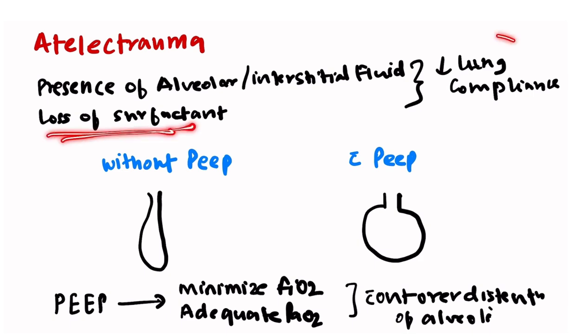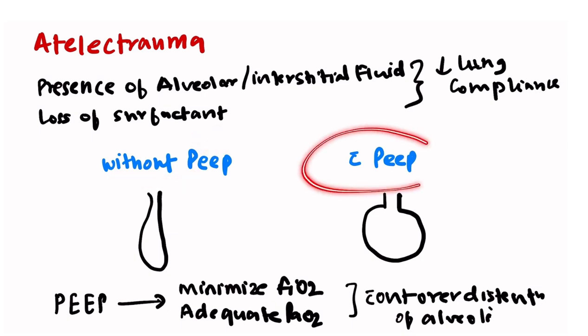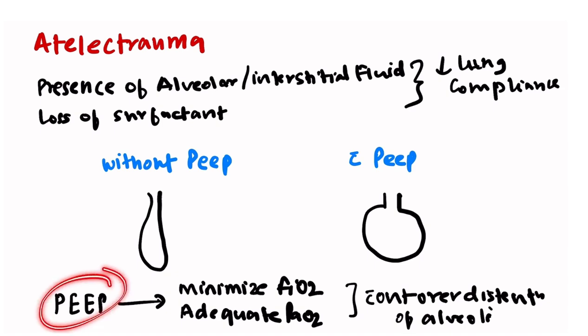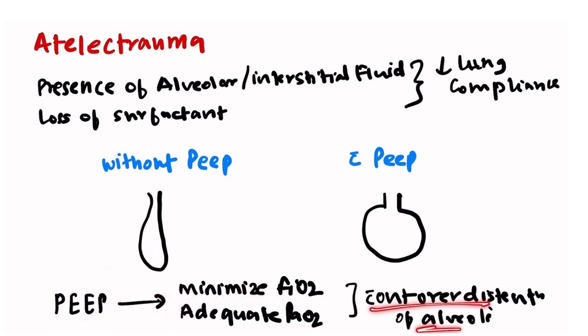Regarding atelectrauma, the presence of alveolar and interstitial fluid and loss of surfactant leads to decreased lung compliance. In this situation, alveoli collapse without positive end-expiratory pressure but remain patent with PEEP. Patients should therefore be kept on optimum PEEP, defined as the level at which FiO₂ is minimized, PaO₂ is adequate, and there is no alveolar overdistension. Multiple studies have failed to establish a specific optimum PEEP value, and this area still needs research.